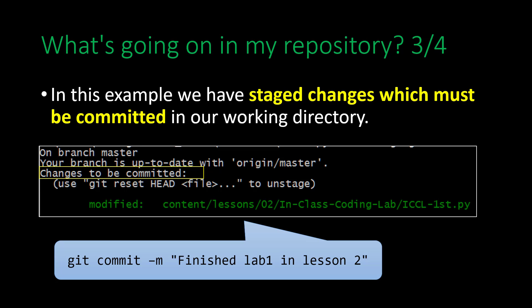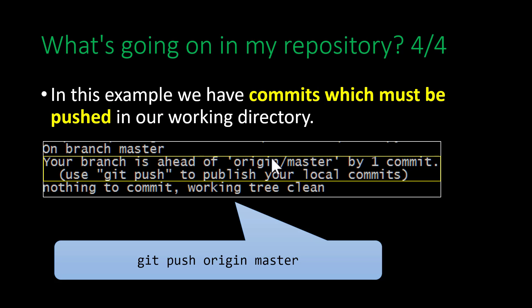We can type the command git commit -m and then put in a message like 'I finished lab one in lesson two' as our commit message. If we type another git status command after we commit, you'll see a message like this. It now says at the bottom that there's nothing to commit, but in the middle it says your branch is ahead of origin master by one commit. Being ahead of origin master means that your local repository is newer than your remote repository. You reconcile this by saying git push origin master.